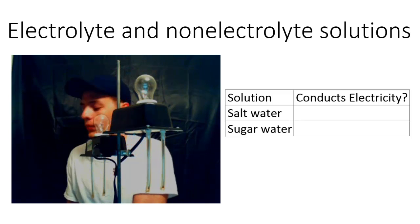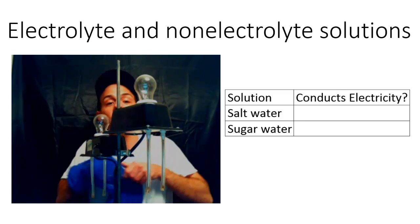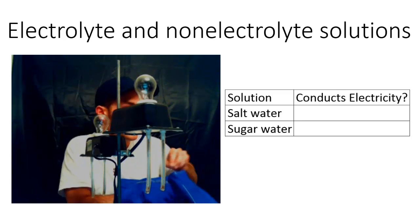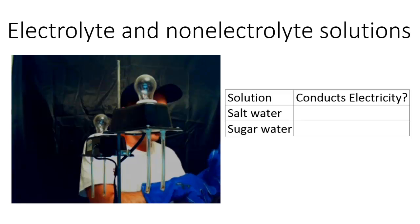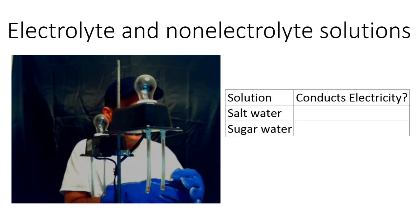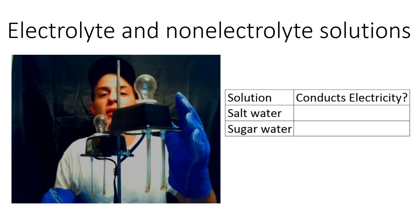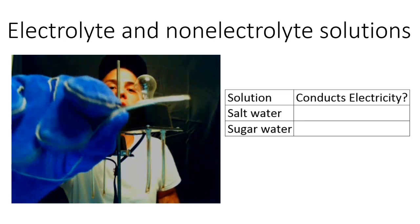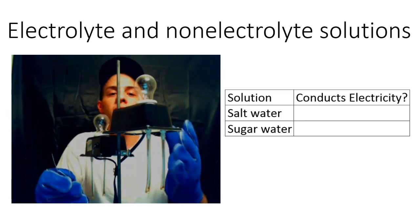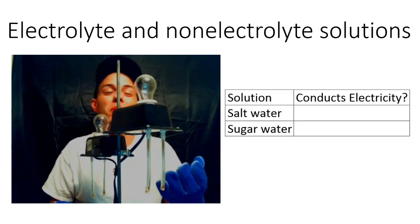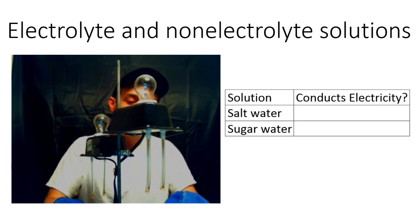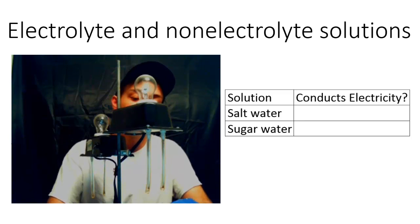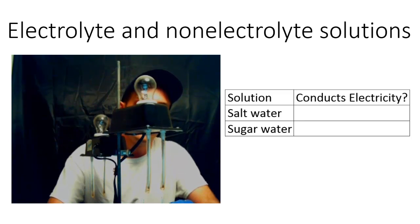A conductivity tester is a good method to test whether something conducts electricity or not. Right now I'm going to test this conductivity tester using a piece of metal wire to see if it works — the light bulb might need to be replaced — and we'll test that out by just touching the leads to this wire and see what happens.